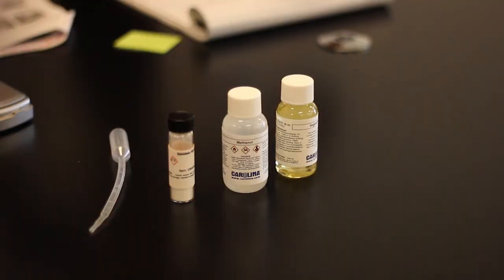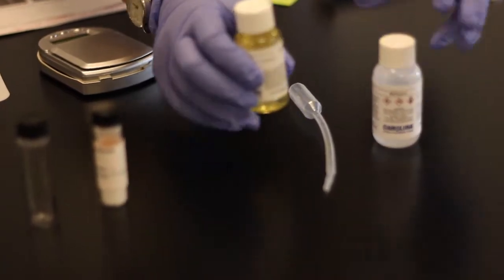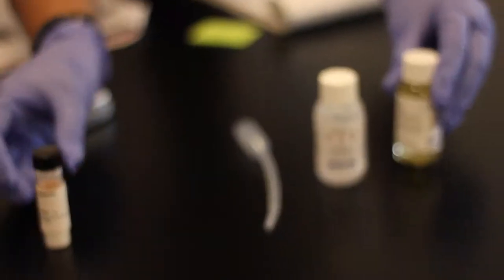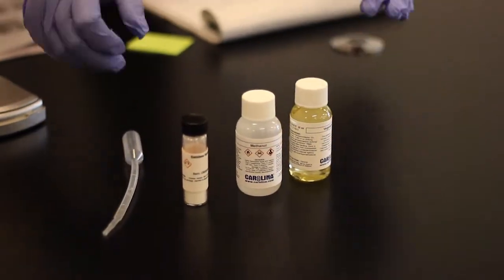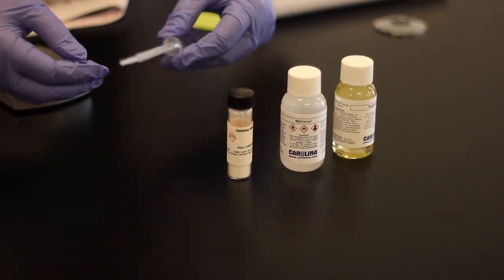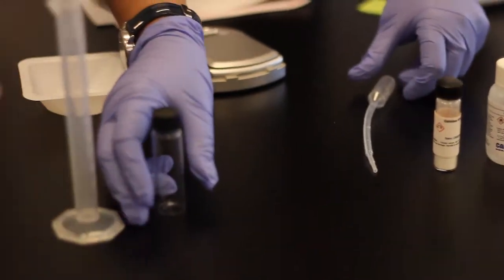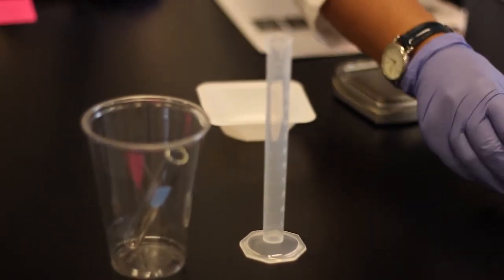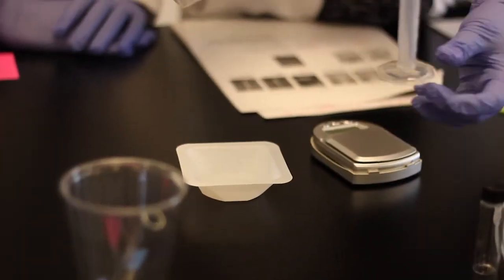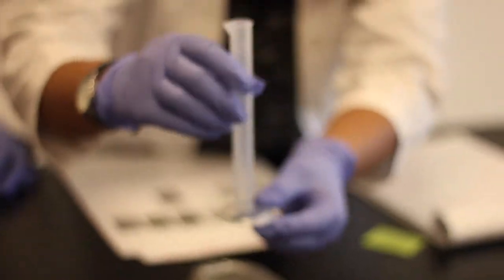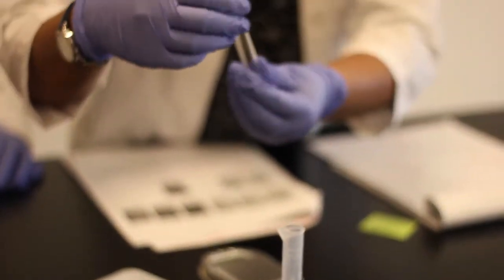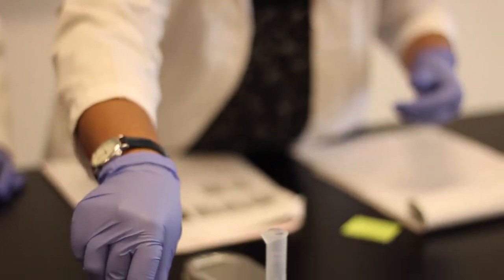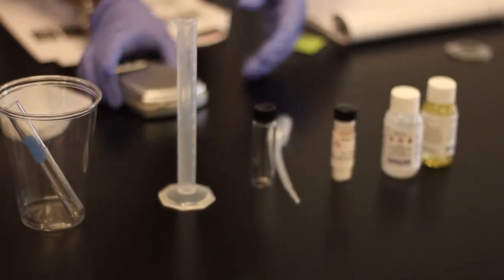So here you have the reactants: methanol, the vegetable oil, and calcium hydroxide. To do the lab, we need a dropper to take some of the vegetable oil, a glass vial, and to measure out the methanol, we need the graduated cylinder. And to do the reaction, we need a glass test tube. So all of these items come in your kit.